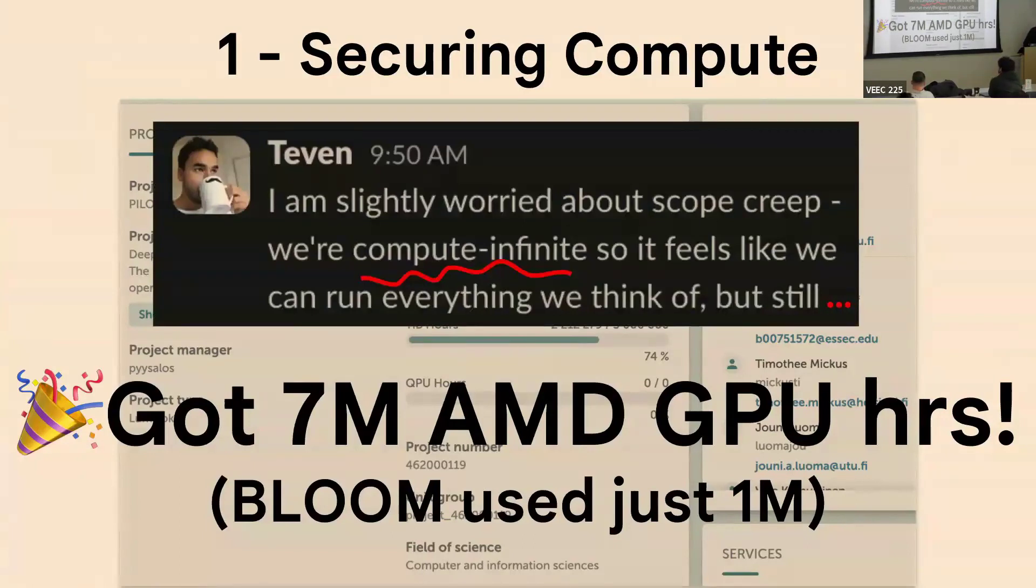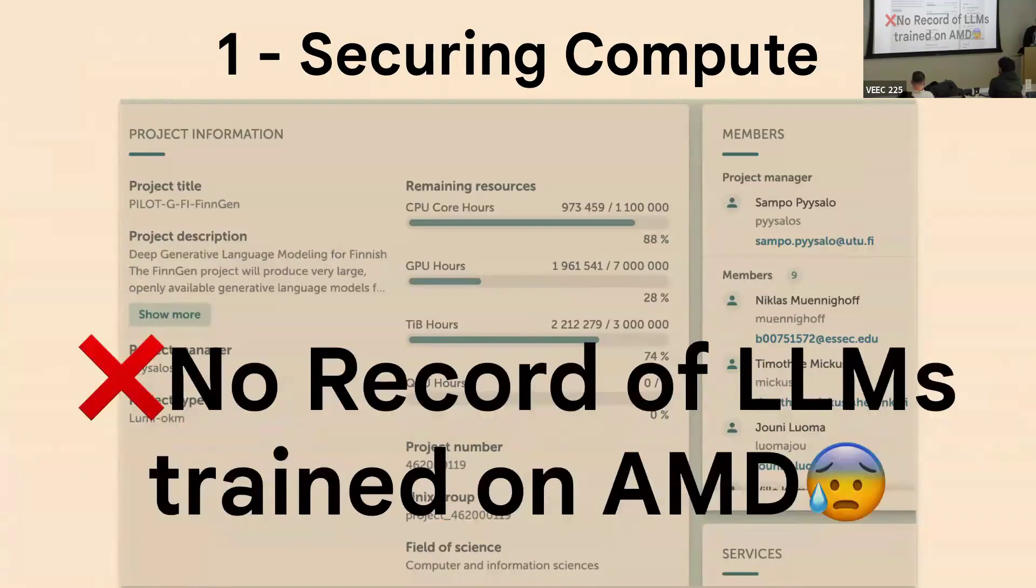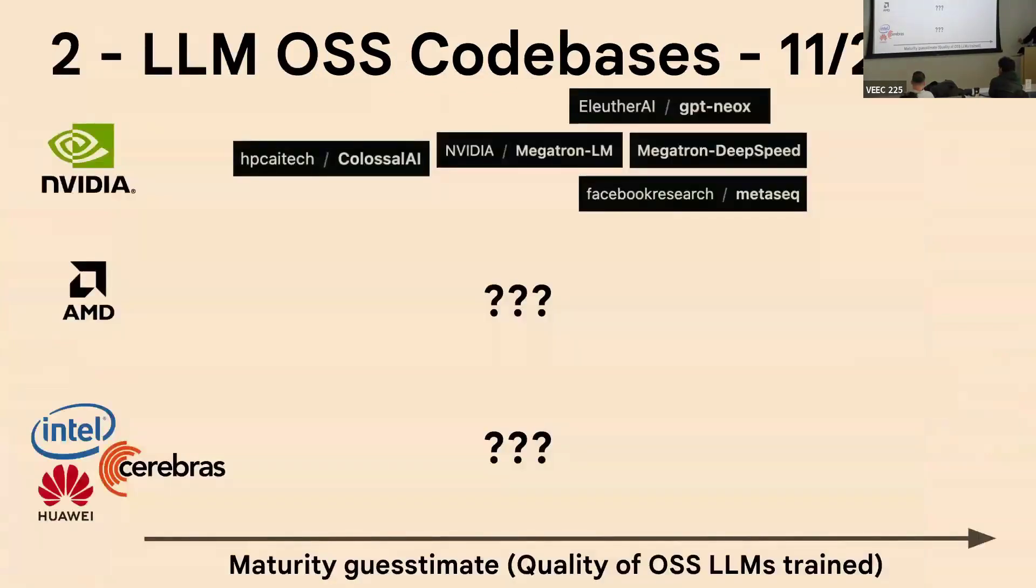However, the big problem was that there was no record of LLMs being trained on AMD. There was no research being done on AMD GPUs, as far as we were aware. So at that point in time, there were a bunch of really cool code bases for training large language models, but most of them were focused on NVIDIA GPUs. Nothing for AMD, and obviously nothing for other GPU providers.